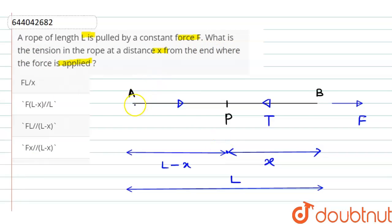So let us consider a rope AB of length capital L. Let P be the point at which we have to determine the value of tension. If PB is equal to x, then PA will be equal to L minus x, because the total length is capital L.